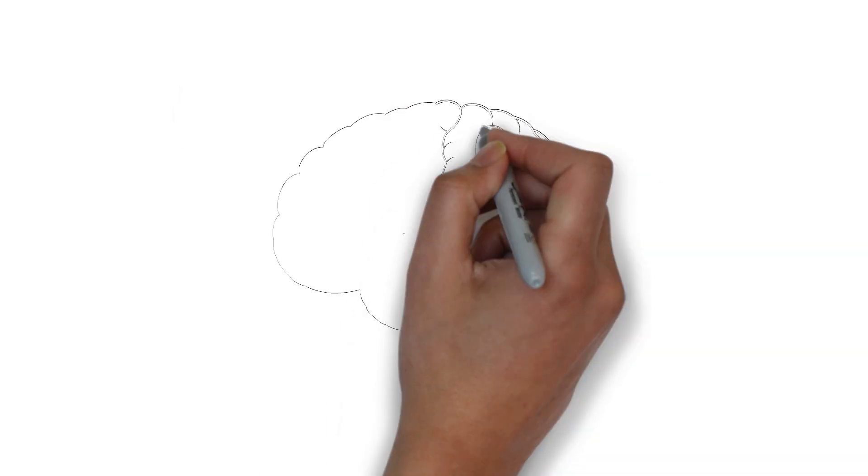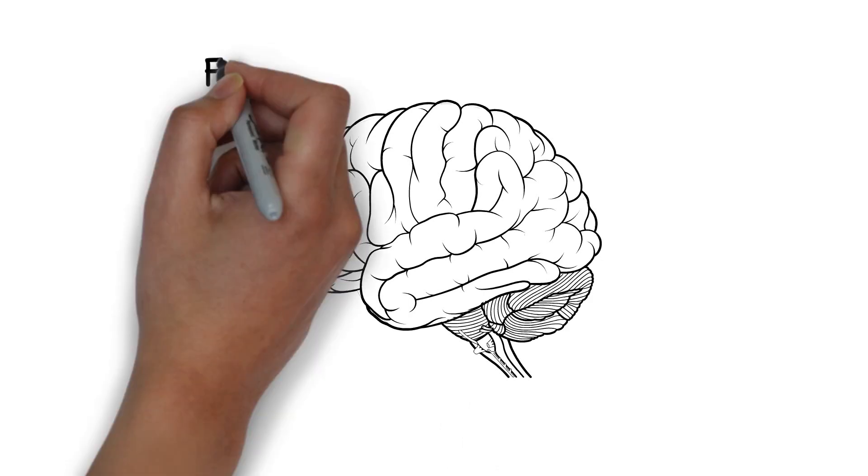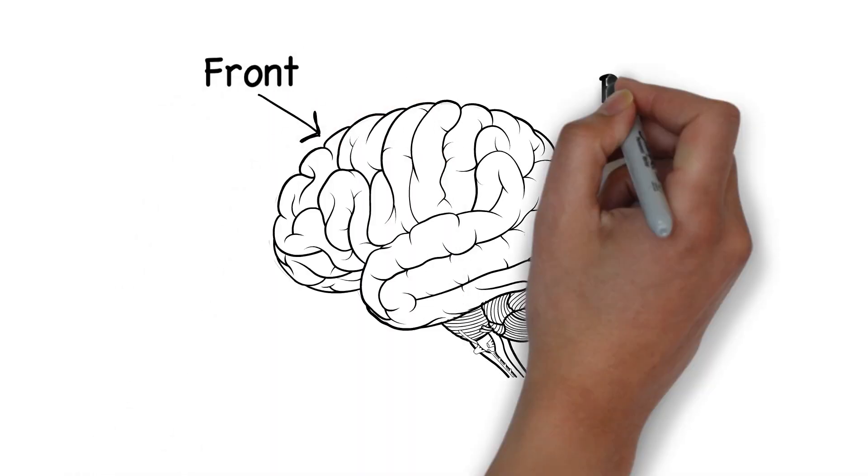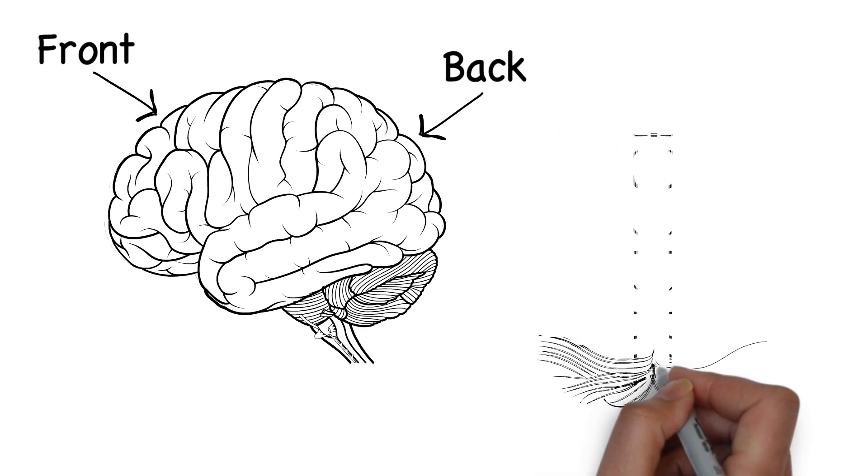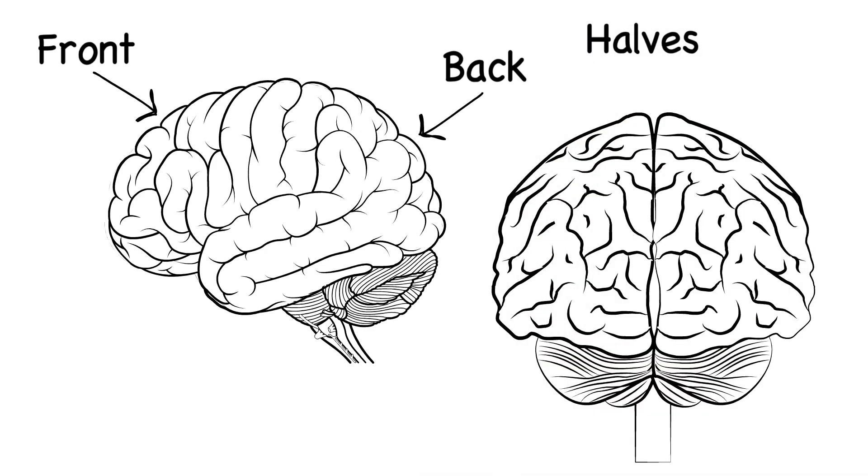This video will give you an overview of the key structures of the human brain. This is the front, this is the rear, and these are the two sides.